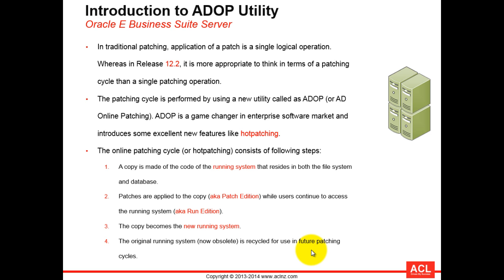The copy then becomes the running system. As soon as you apply a patch and the patch cycle completes, you release the new patch edition as the running edition. In other words, the patch edition becomes the new running system. The original running system becomes obsolete and can be recycled for the next patching cycle. That is how the hot patching cycle works using the ADOP utility.